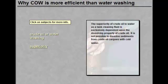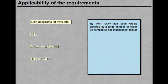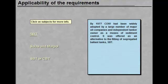By 1977, crude oil washing had been widely adopted by a large number of major oil companies and independent tanker owners as a means of sediment control. It was offered as an alternative to the fitting of segregated ballast tanks.